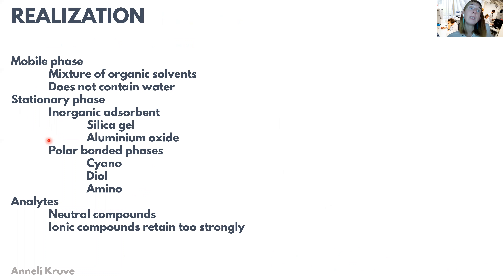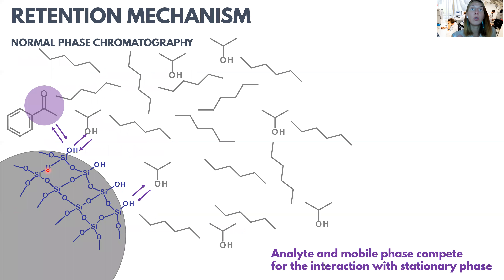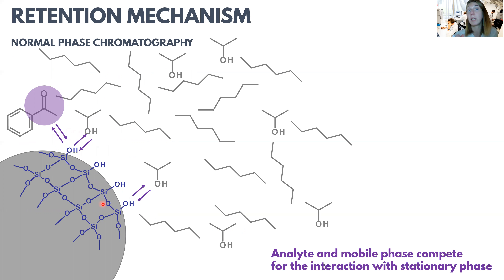From a practical point of view, the mobile phase is usually a mixture of two or more organic solvents and does not contain any water. The reason is that water would interact so strongly with the silenol groups that analytes would not be able to compete — all the silenol groups would be occupied by water molecules and the analytes would not have any chance of retention.